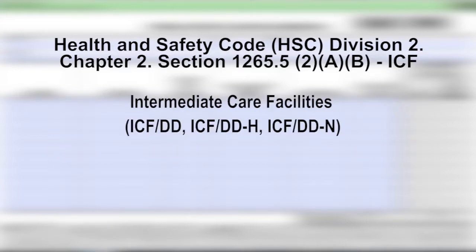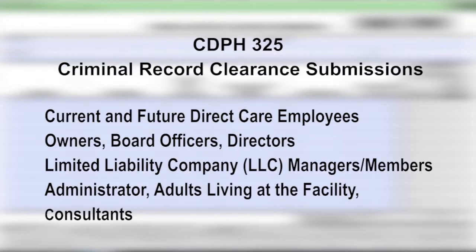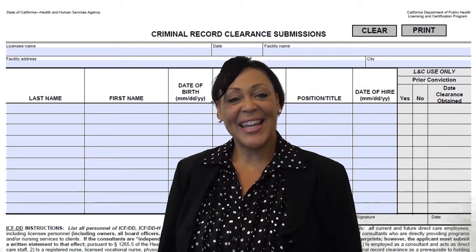When completing this form, list all personnel of ICF/DD, ICF/DD-H, and ICF/DD-N. The list must include but is not limited to the following individuals: all current and future direct care employees, including licensee personnel, including owners, all board officers, directors, LLC managers/members, administrator, any adults living at the facility, and consultants who are directly providing program and/or nursing services to clients.